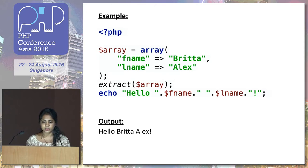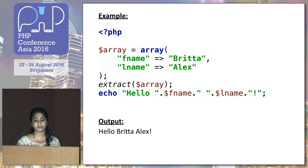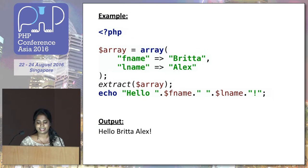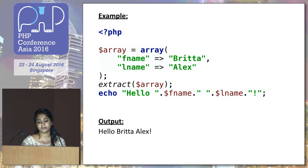Here's an example. This is an associative array with a first name and last name. I'm extracting the first name and last name, using the array keys as the variable names.